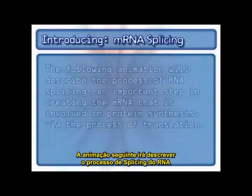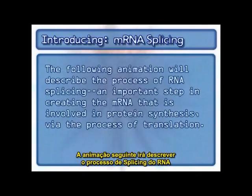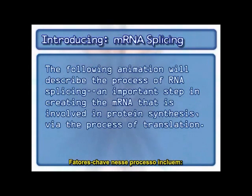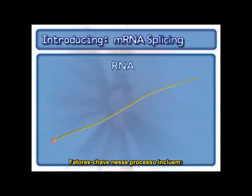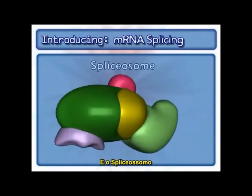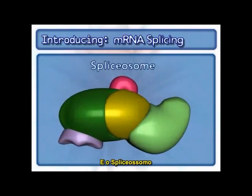The following animation will describe the process of RNA splicing, an important step in creating the mRNA that is involved in protein synthesis via the process of translation. Key factors in this process include RNA possessing introns and exons, and the spliceosome.